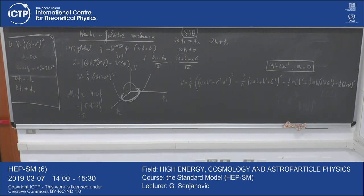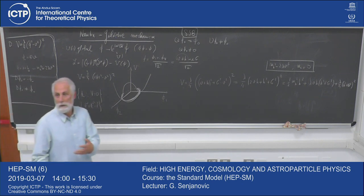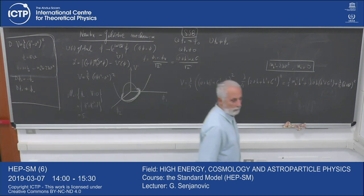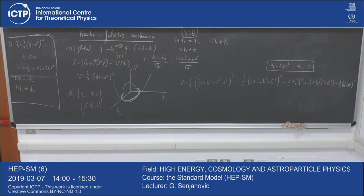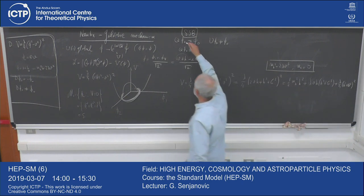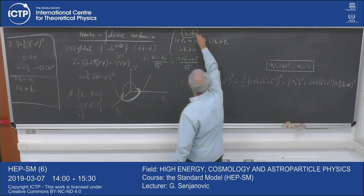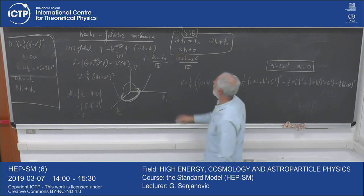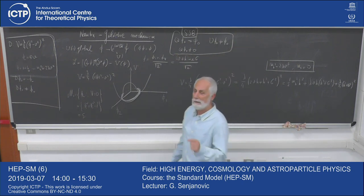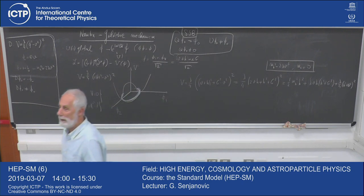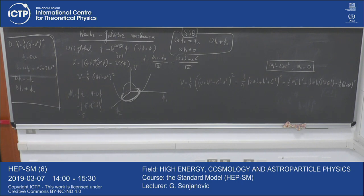Equivalent statement: U phi_0 is not equal to phi_0, where U = E to the I alpha Q is the U(1) unitary transformation. So Q phi_0 different from 0 is an indication of spontaneous symmetry breaking. Another way of seeing it: the vacuum is not invariant under the particular rotation in question. If I choose SU(2), that will mean there are SU(2) rotations that do not annihilate the vacuum. This is a measure of spontaneous symmetry breaking, and we are now proving the Goldstone theorem: whenever a particular charge is broken — meaning it does not annihilate the vacuum — there is a massless particle we call the Nambu-Goldstone boson.